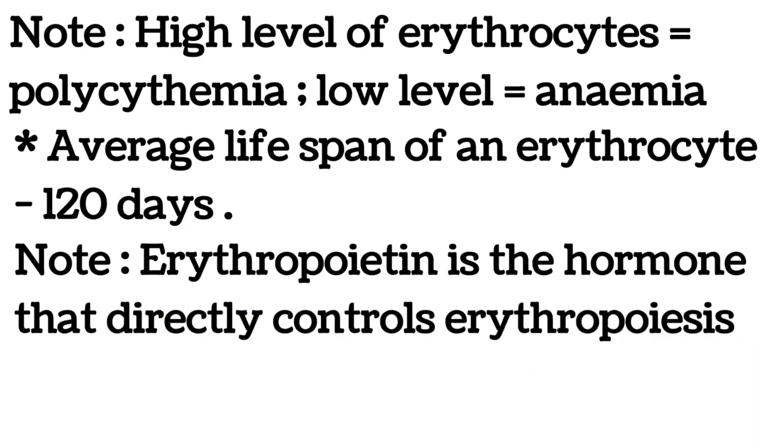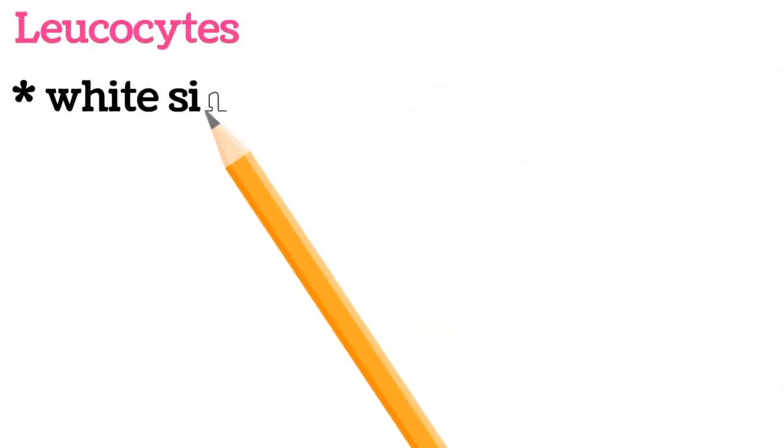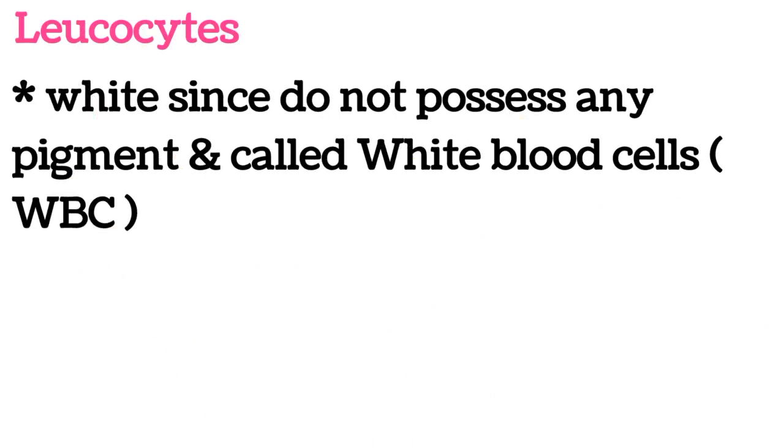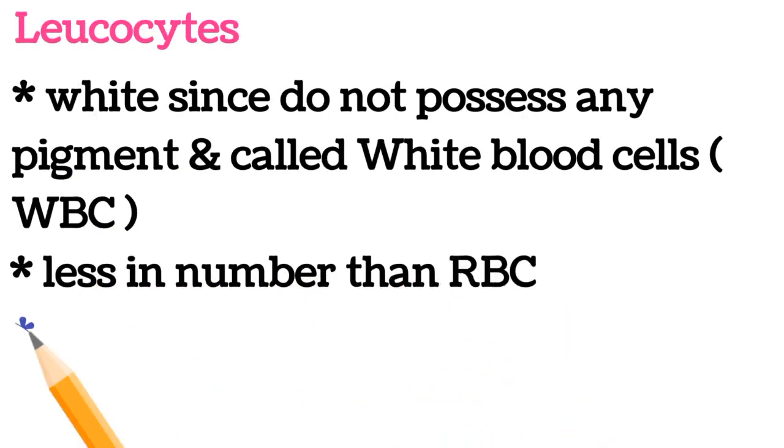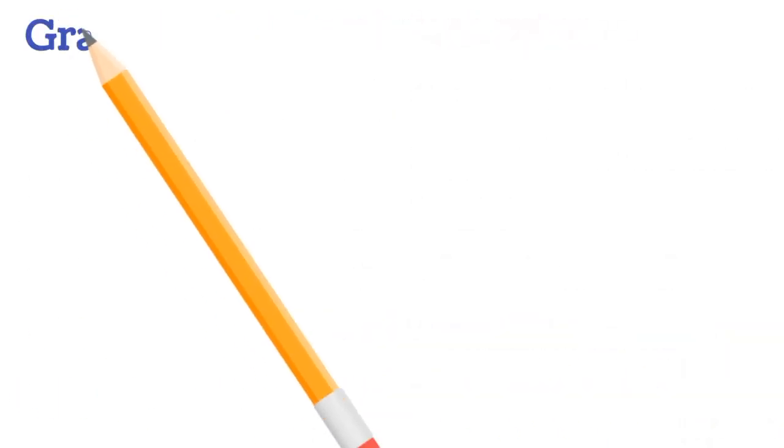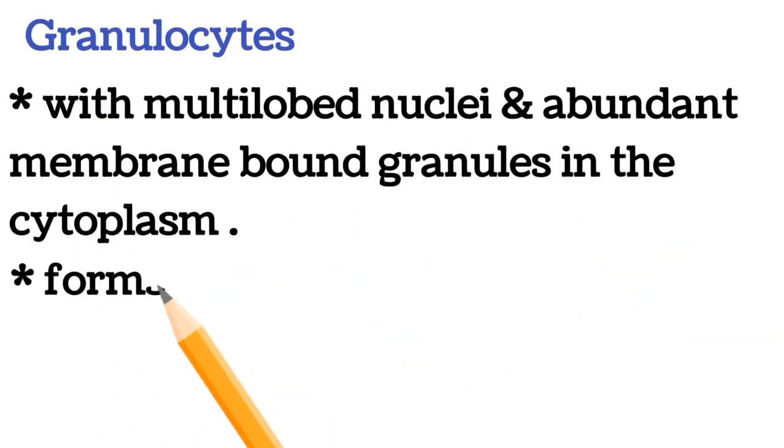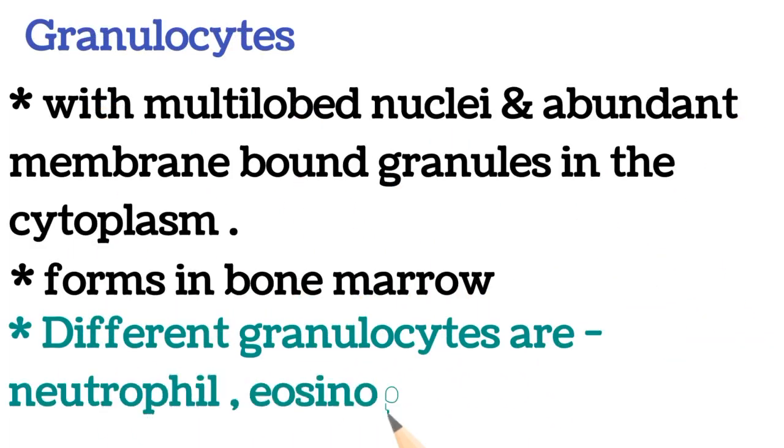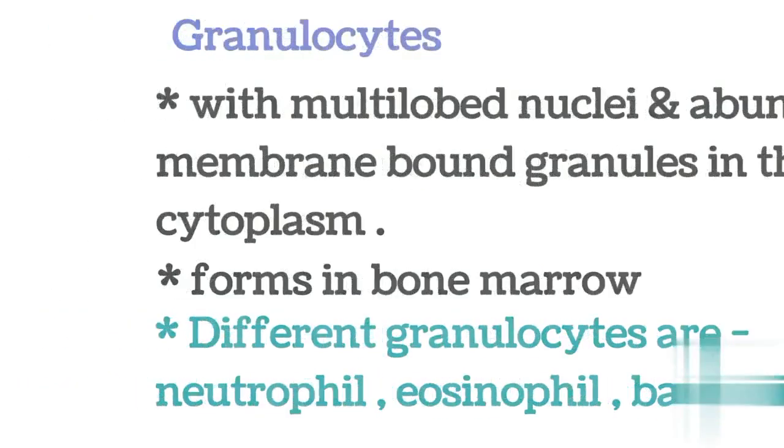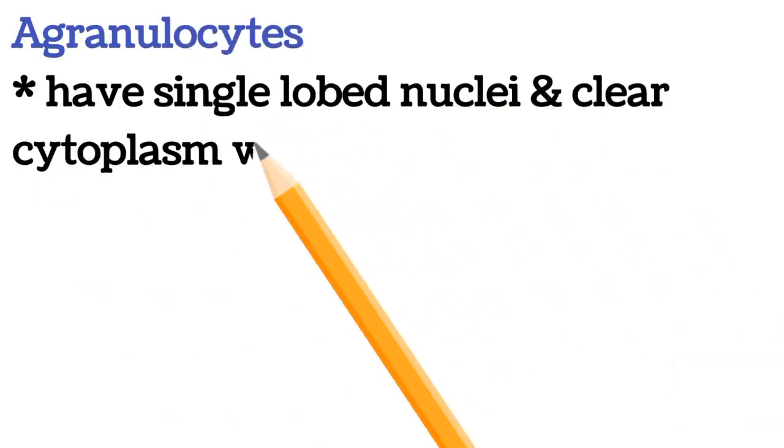Leukocytes, white cells, do not possess any pigment and are called white blood cells (WBC). They are less in number than RBC, classified into granulocytes and agranulocytes. Granulocytes have multi-lobed nuclei and abundant membrane-bound granules in the cytoplasm, form in bone marrow. Different granulocytes are neutrophil, eosinophil, basophil.